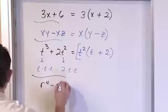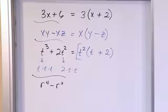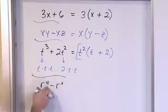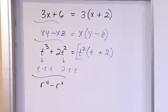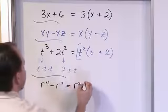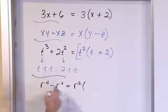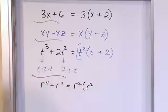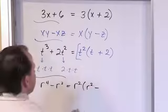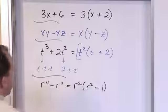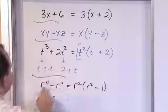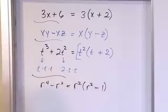Now r to the fourth minus r squared. How many r's can I pull out? r to the fourth has four r's and r squared has two, so at least two are common. I pull out r squared. Inside I need r squared for the first term, and just negative one for the second — because I've pulled out all the r squares. Check: r squared times r squared is r to the fourth; r squared times negative one is negative r squared.